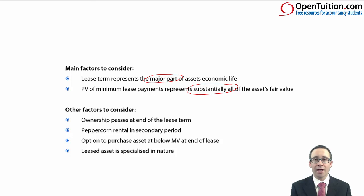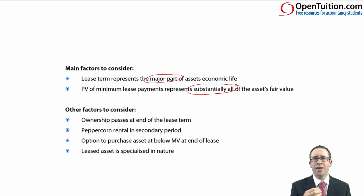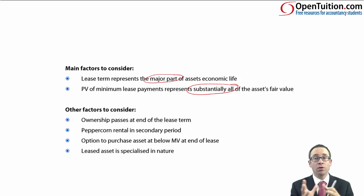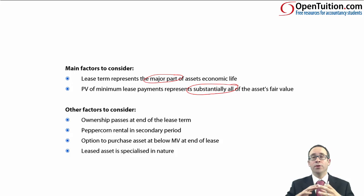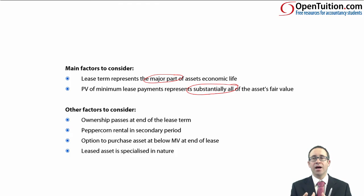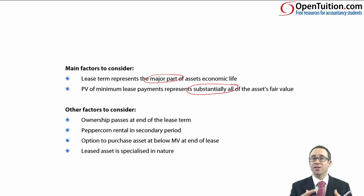Don't forget there could also be computational aspects, and those tend to arise within question one. However, do be aware that in recent history there was a question in question 2 involving a sale and leaseback transaction — which we touch upon later — where as well as discursive elements, it also required some computational work. So question one is purely computational within the group accounts, but as you move into question 2 or question 3, there is a more discursive element with the possibility of some numbers as well. Hopefully you're now familiar with what constitutes a finance lease versus an operating lease.